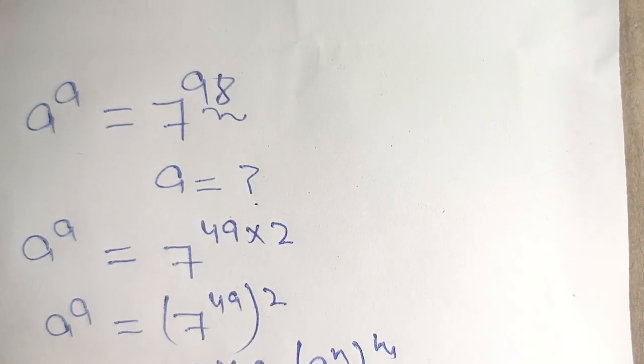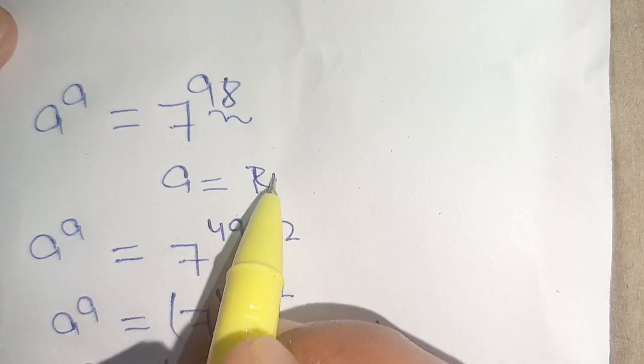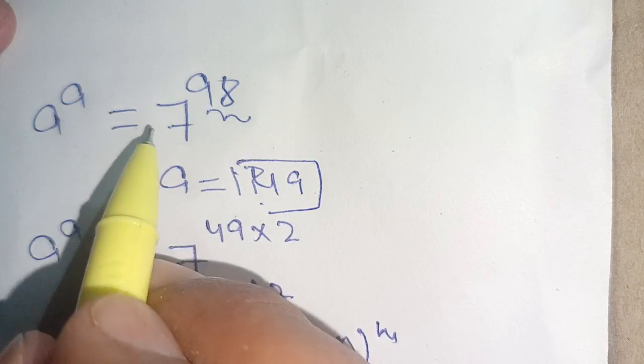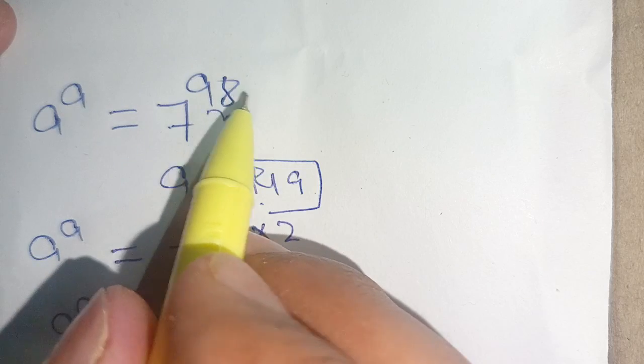Thus a is equal to 49 which satisfies our exponential equation a raised to power a is equal to 7 raised to power 98.